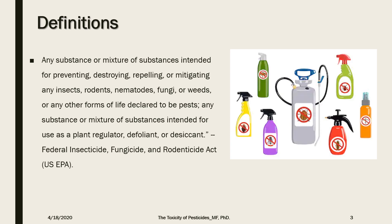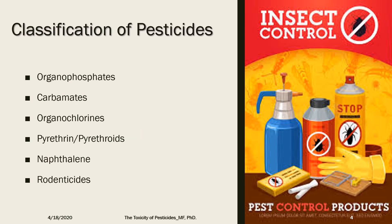It is important to know that the suffix '-cide,' when added to a word, refers to the killing or elimination of that organism or species. Therefore, bactericide means killing of bacteria, fungicide refers to killing fungi, rodenticides refers to substances that kill rodents, and herbicides refers to substances used to get rid of weeds.